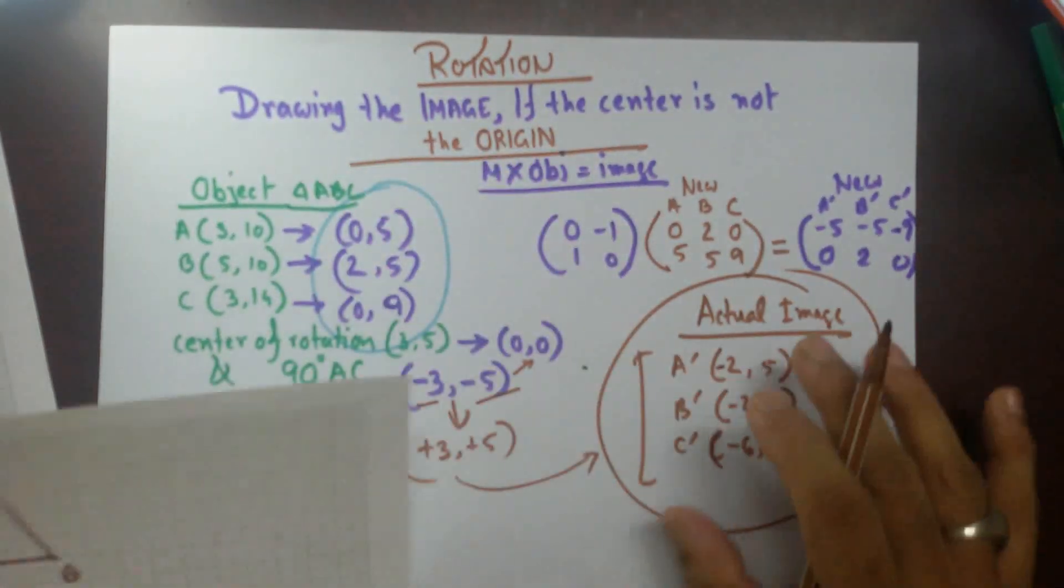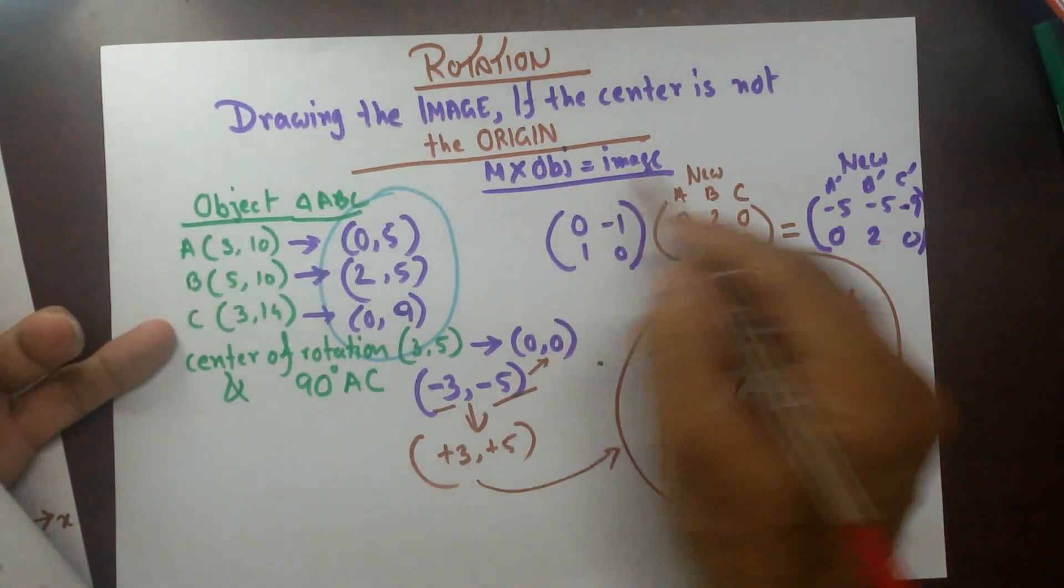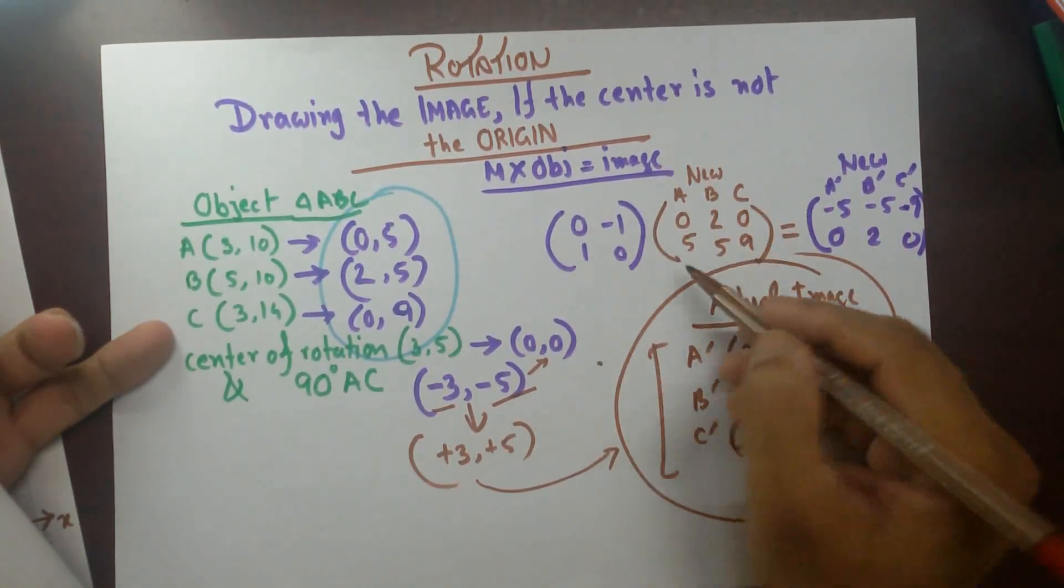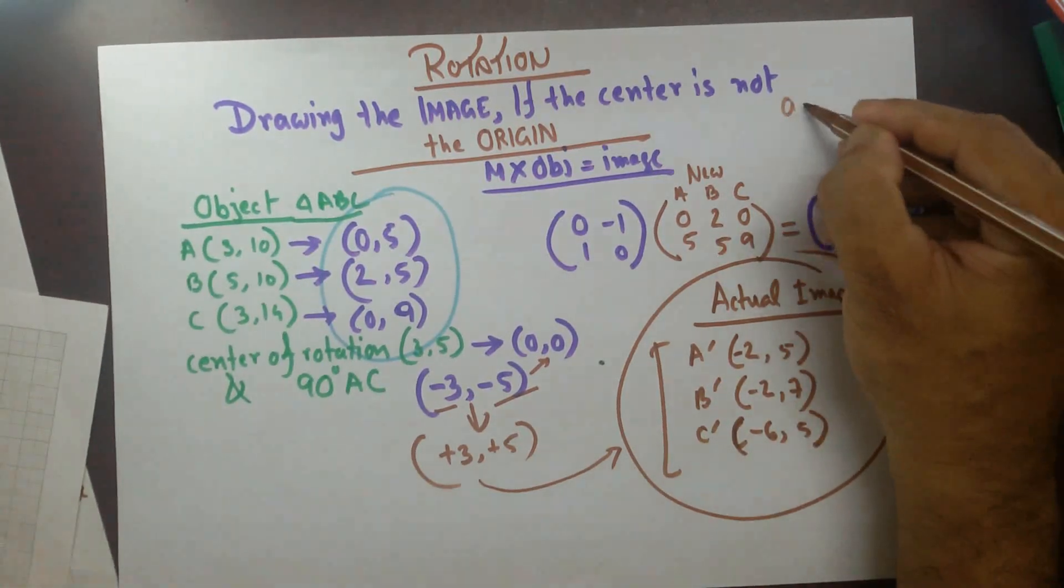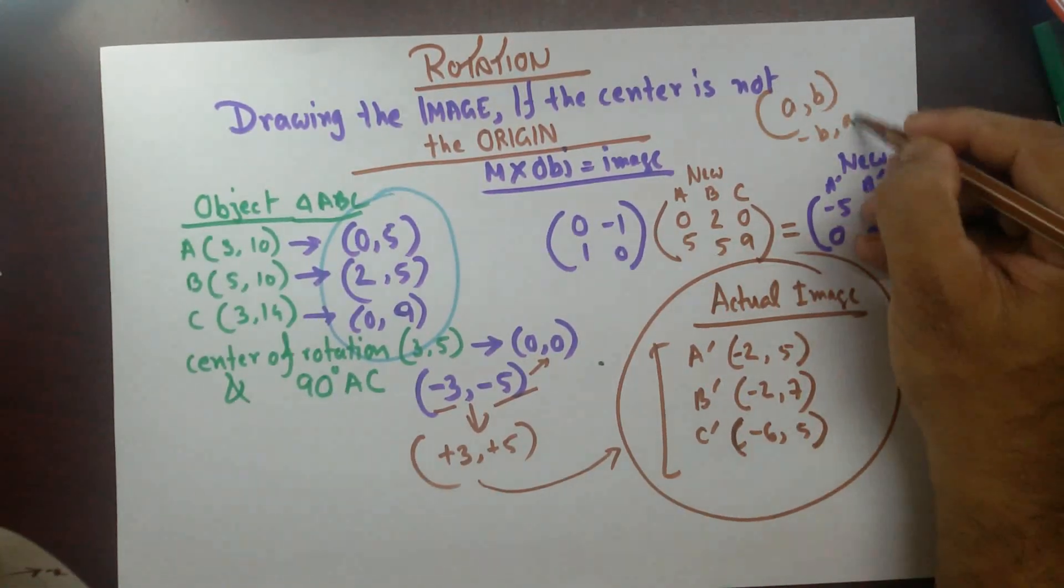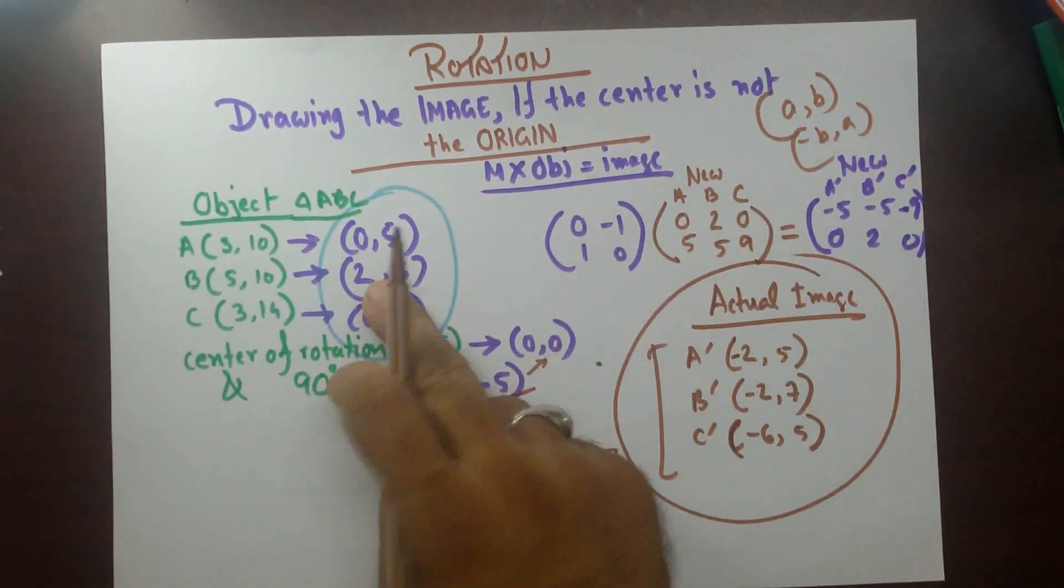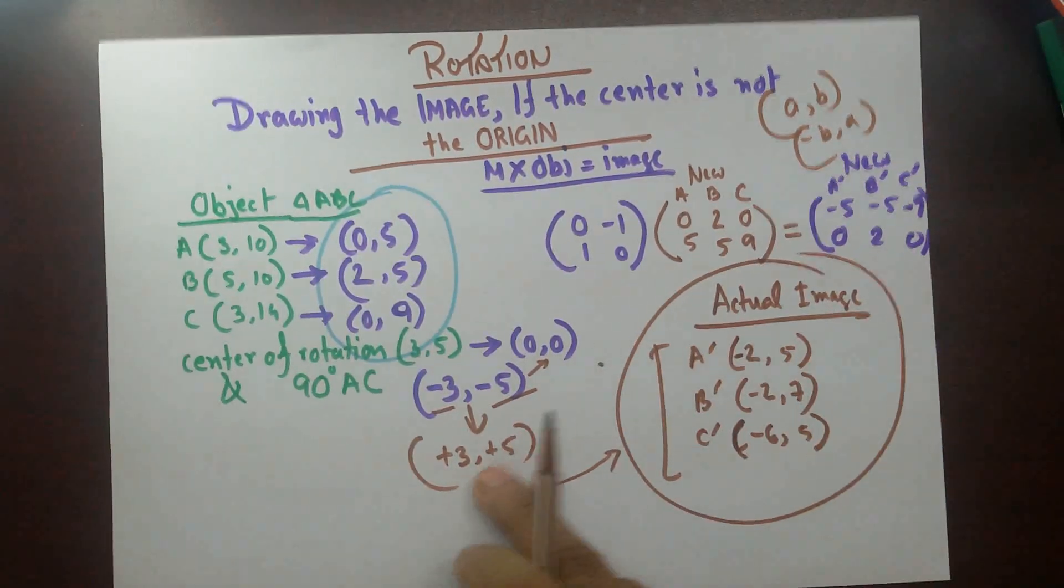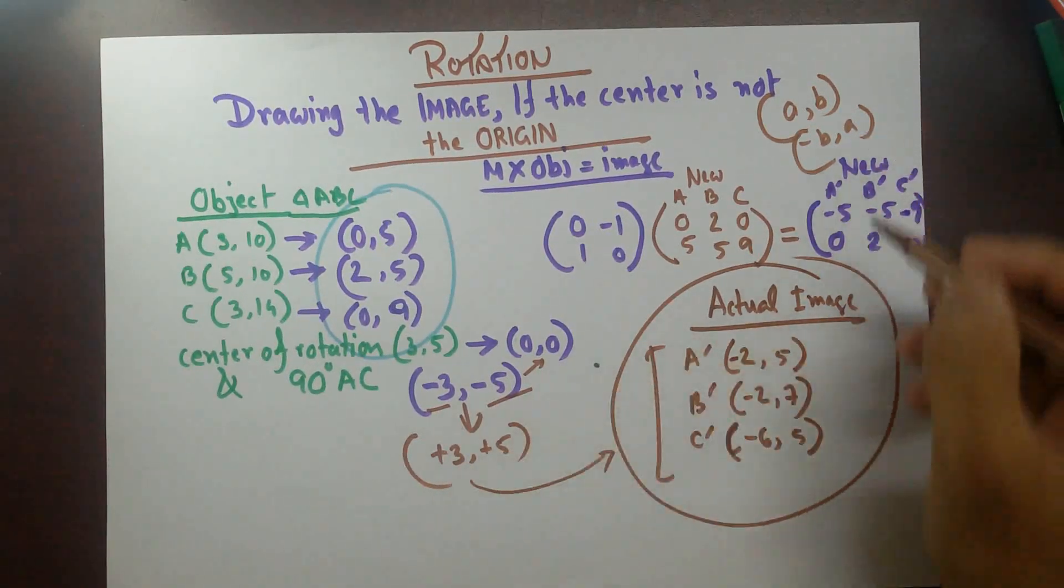But probably some of you would love to know how to do this using the transformation matrix. You could have done that with the formula as well. I hope you remember the formula. A, B turns to be minus B, A. So same way, you could just use this formula over here and then add 3 plus 5 to X coordinates and Y coordinates correspondingly. And you can get this one.